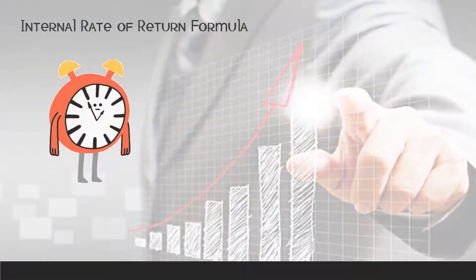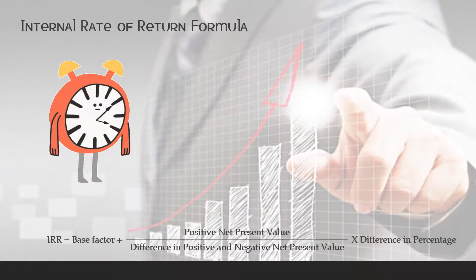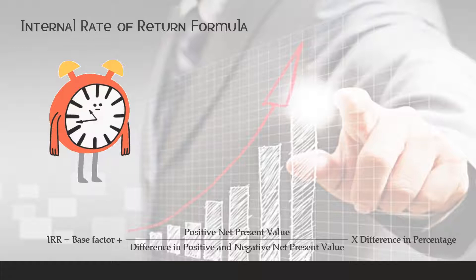Internal rate of return formula. What is the formula for calculating internal rate of return? IRR is equal to base factor plus positive net present value divided by the difference in positive and negative net present value, multiplied by the difference in percentage.